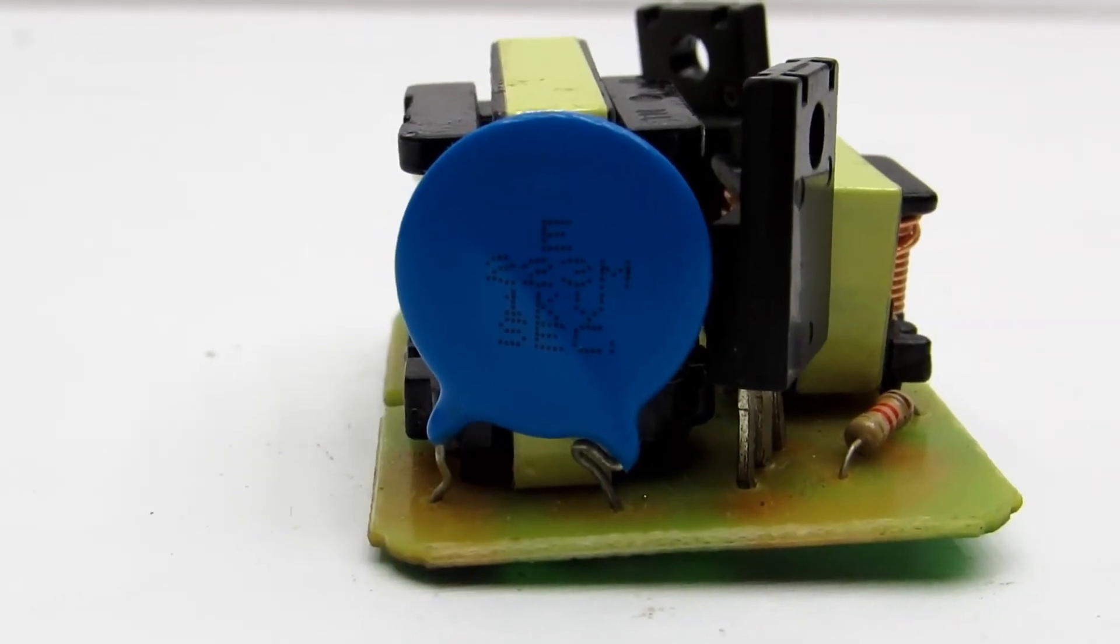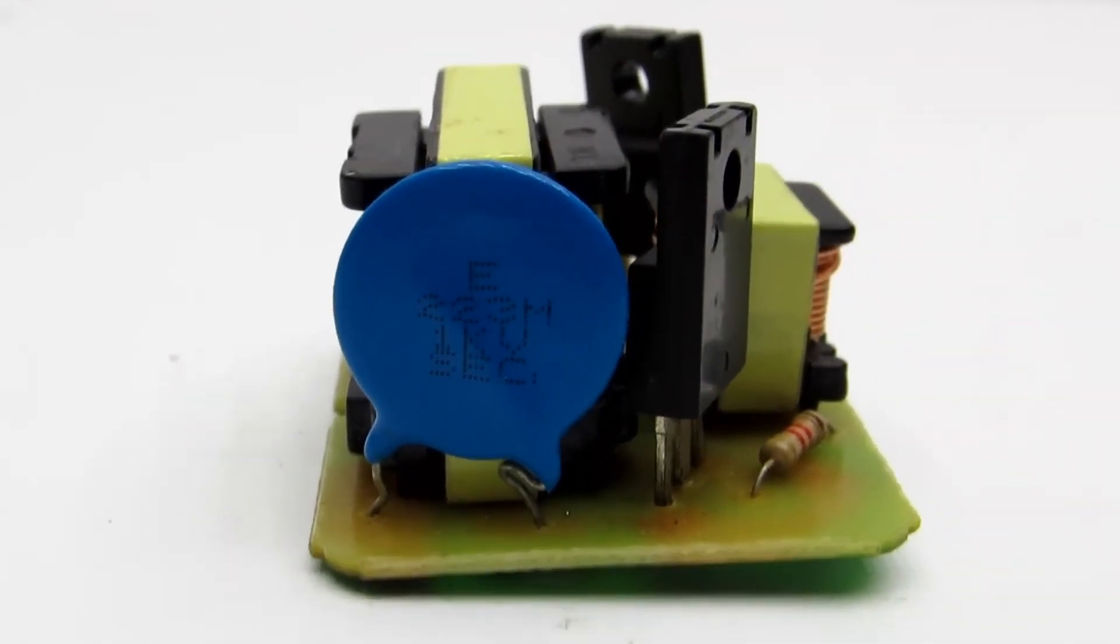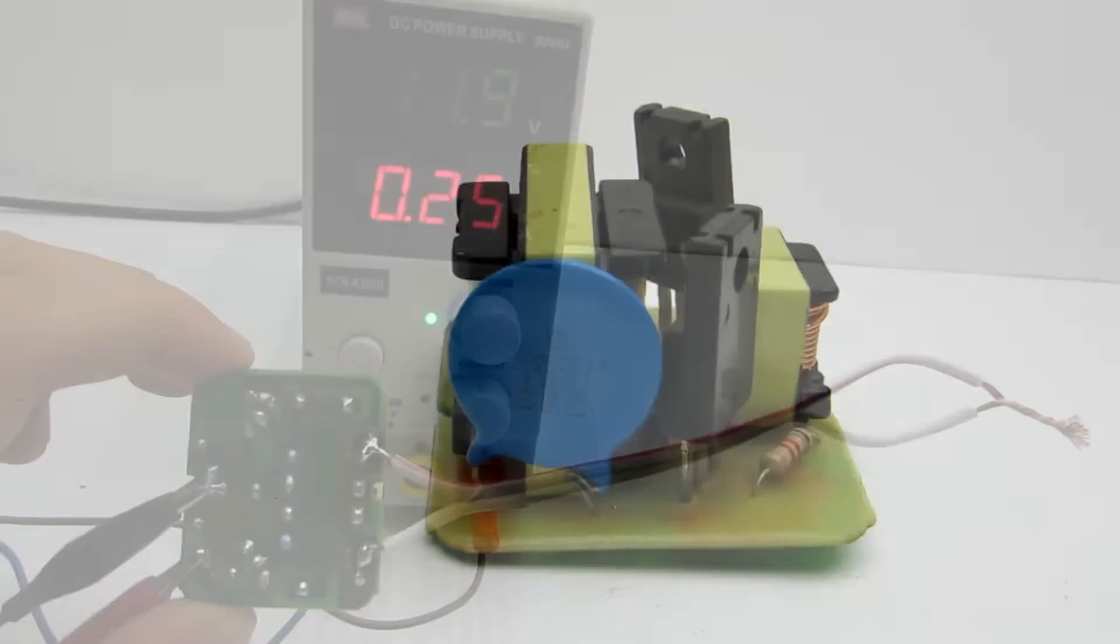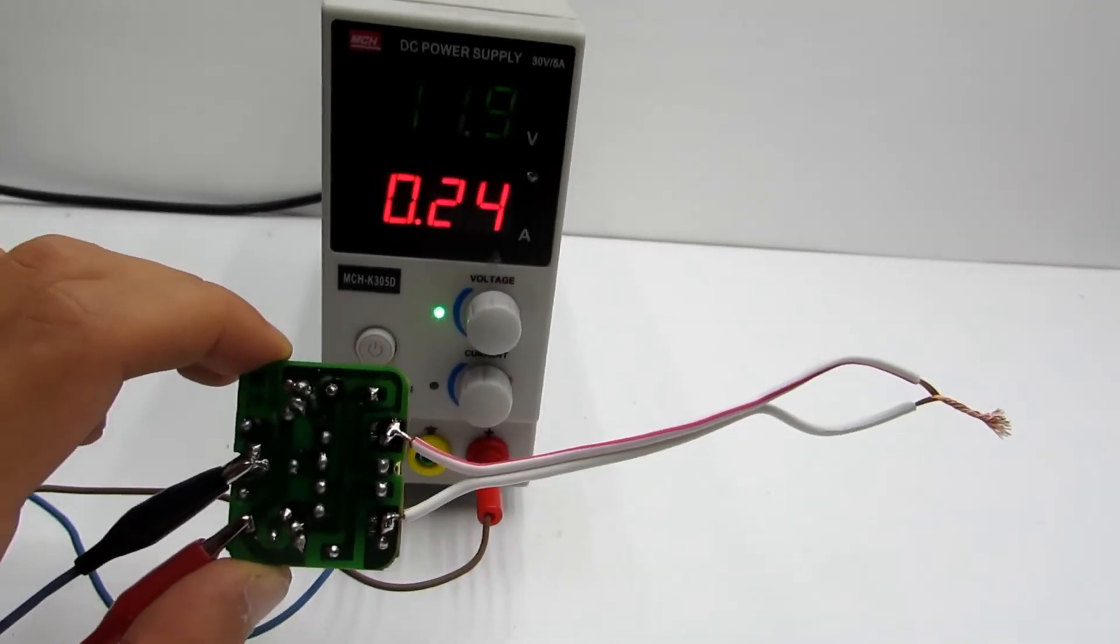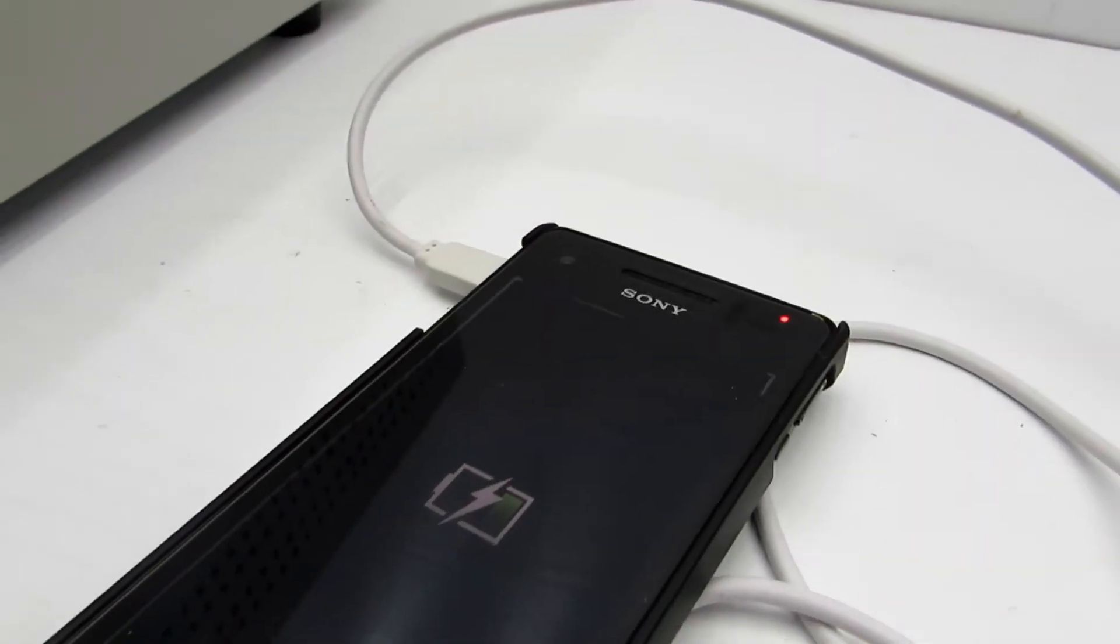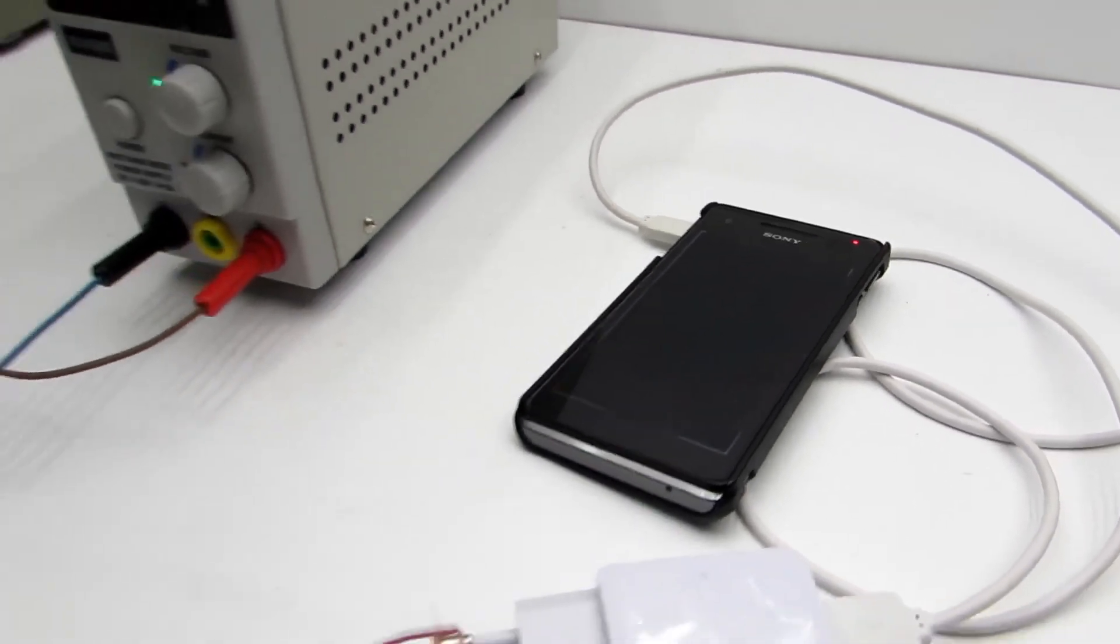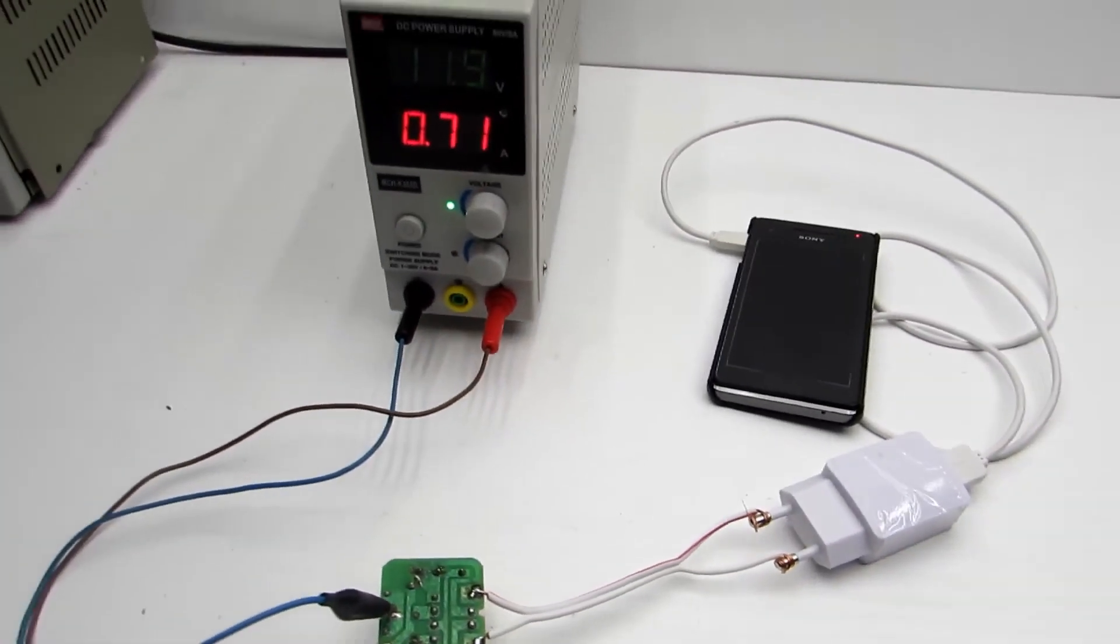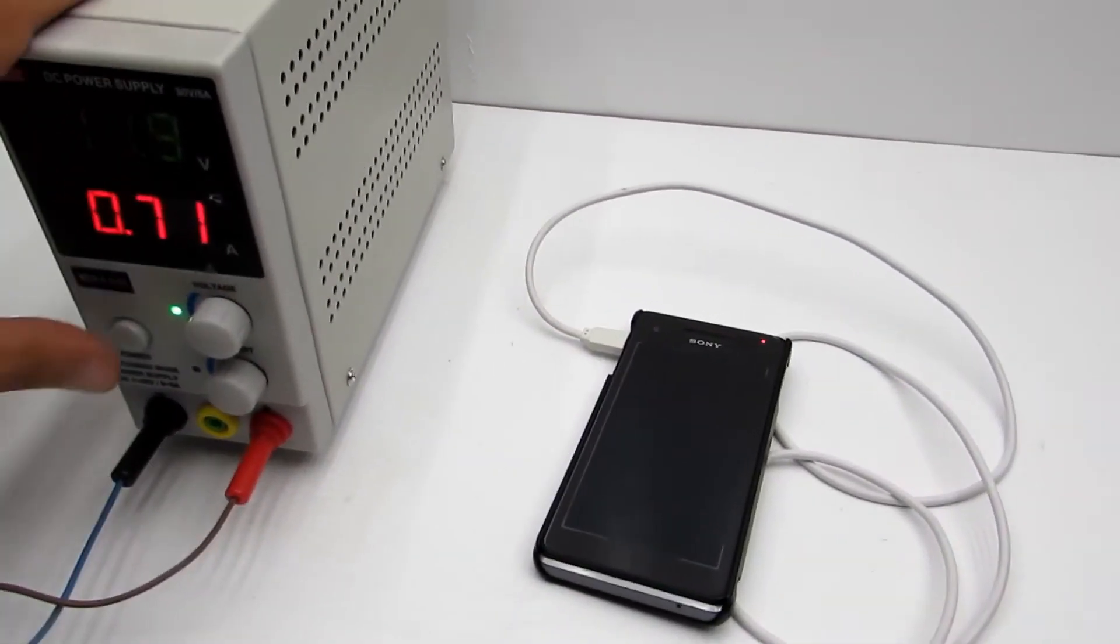The short circuit current is limited by the output coupling capacitor. In other words, this inverter is not afraid of short circuits at the output. Just out of curiosity, let's try to charge a mobile phone from this converter using the phone's original charger.